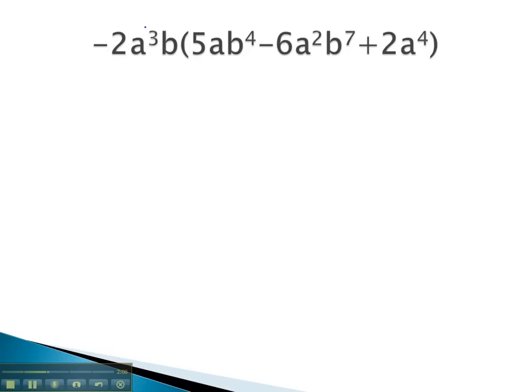When we first do it onto the 5ab to the 4th, negative 2 times 5 is negative 10. For the a's, we'll add the exponents 3 plus 1 to get a to the 4th. On the b's, we'll add the exponents 1 plus 4 to get 5. Negative 10a to the 4th, b to the 5th is our first term.